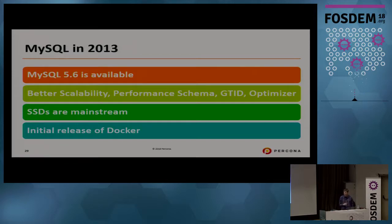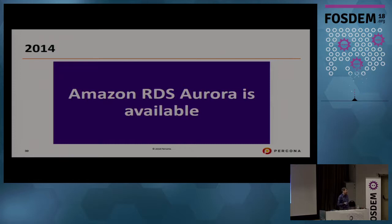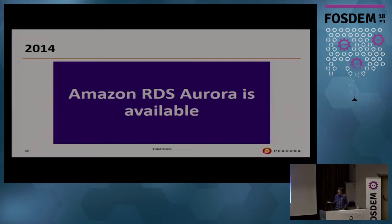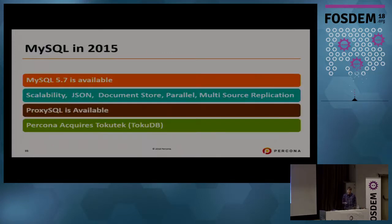In 2014, Amazon RDS Aurora had its first release. Aurora is an interesting new kind of software that happens with cloud systems — it's based on open source but is not itself open source. It promises additional features and scalability, but at the risk of serious vendor lock-in, similar to what comes with proprietary software. In 2015, MySQL 5.7 became available.